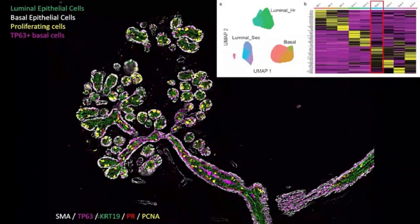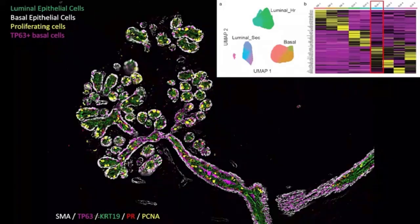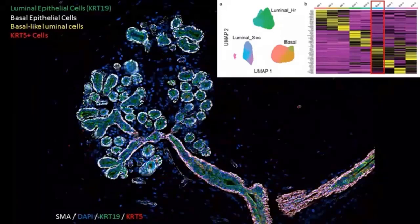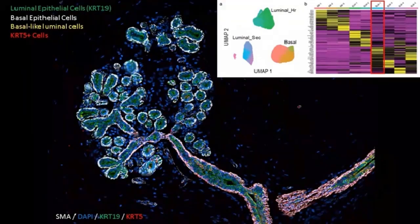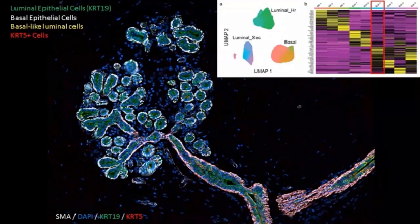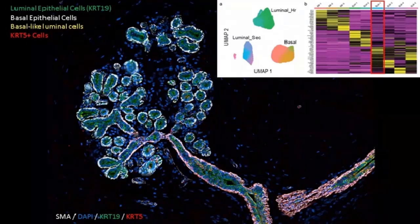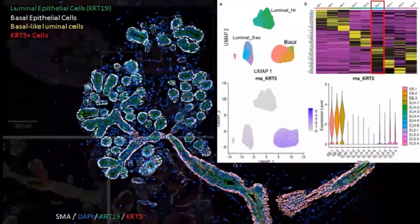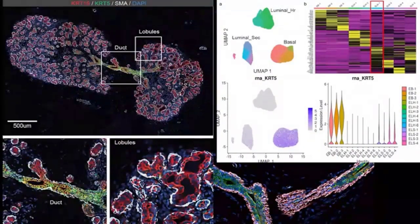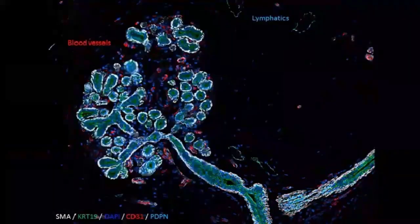We can see the connection between keratin-8-high and progesterone receptor-expressing cells. We can capture proliferating cells using PCNA, a nuclear stain that pops out particularly in luminal cells in both ducts and lobules. One particular cell state within the epithelium shows higher levels of proliferation, matching up with our CODEX data nicely. Another interesting aspect is that one luminal cell state seems positive for the basal cell marker keratin 5 — we see several keratin-5/keratin-19 double-positive cells typically emerging within the ducts of the tissue.